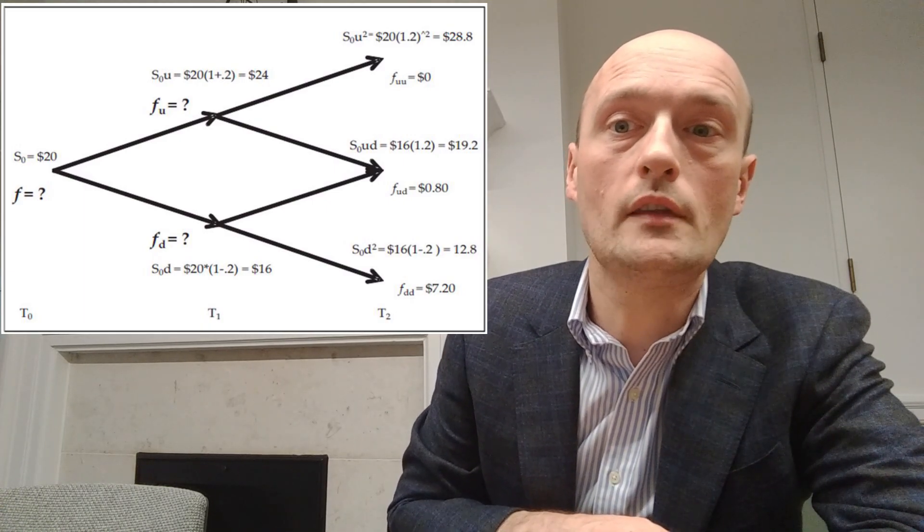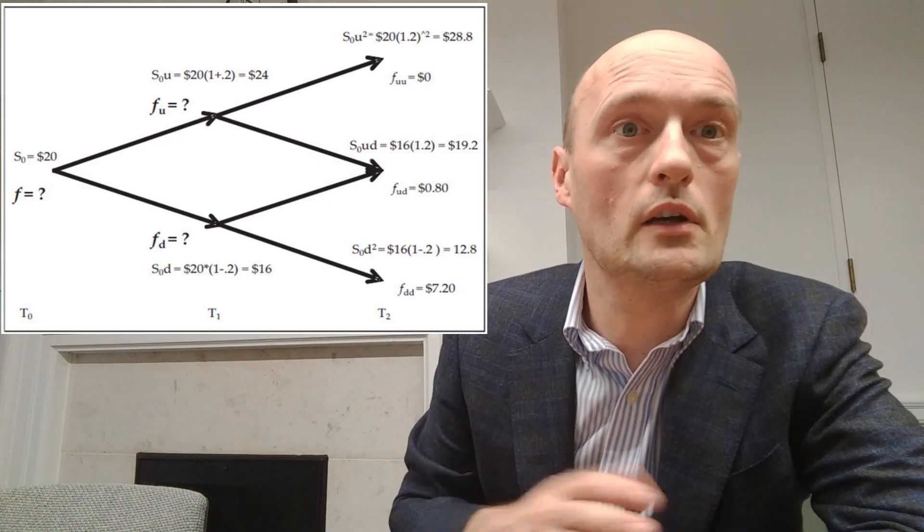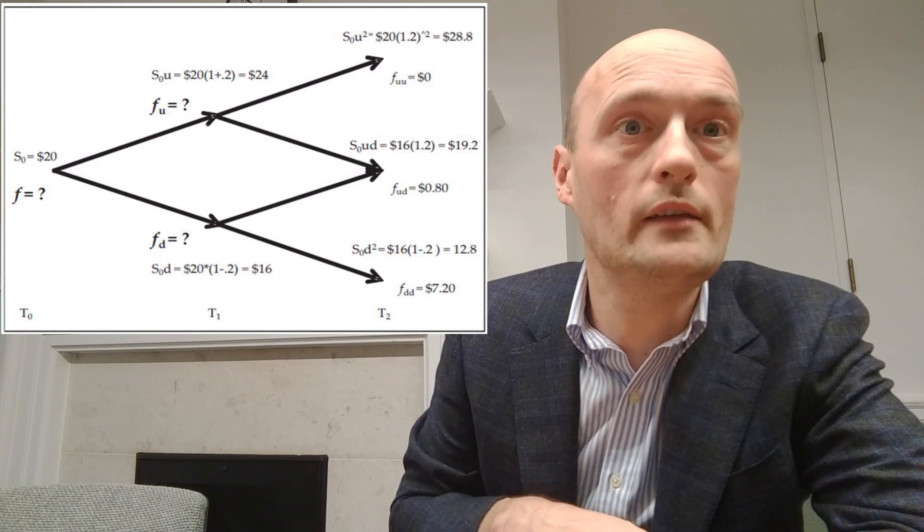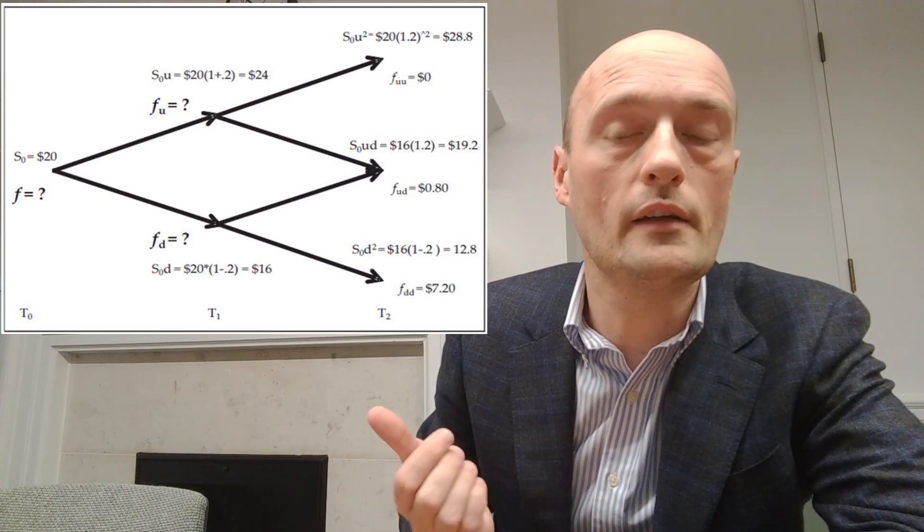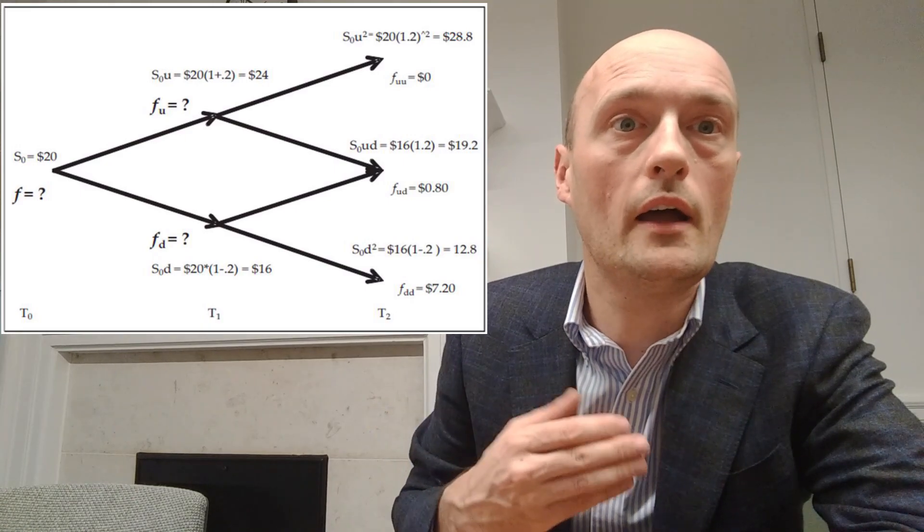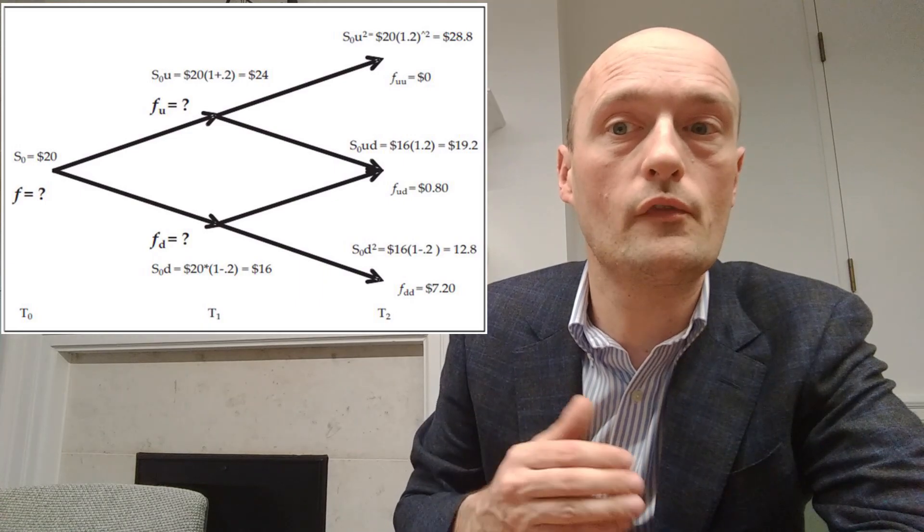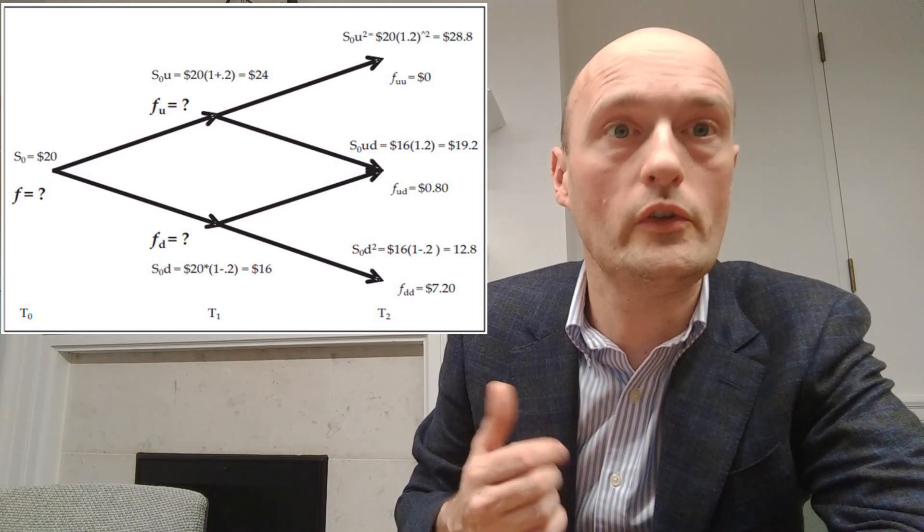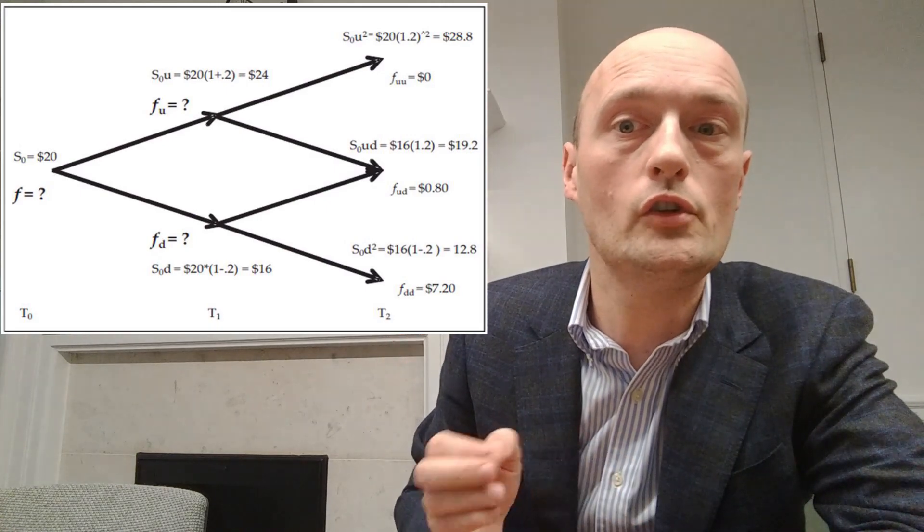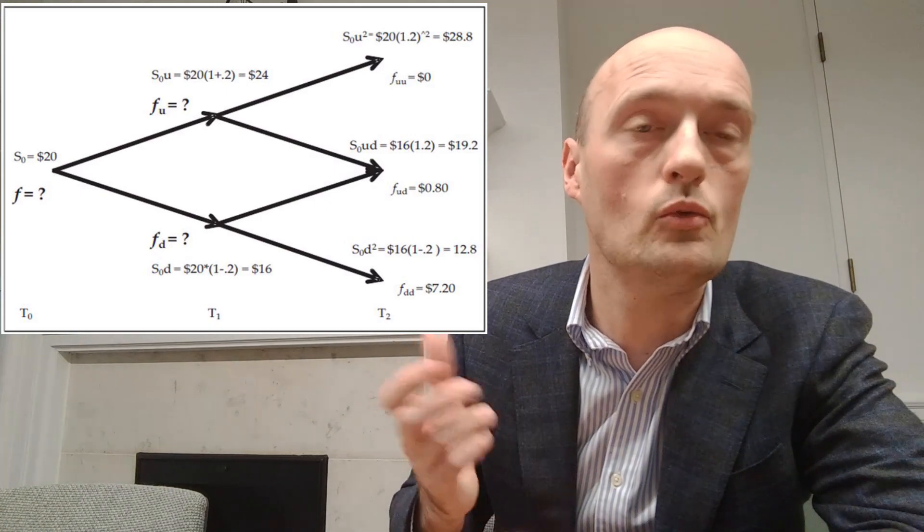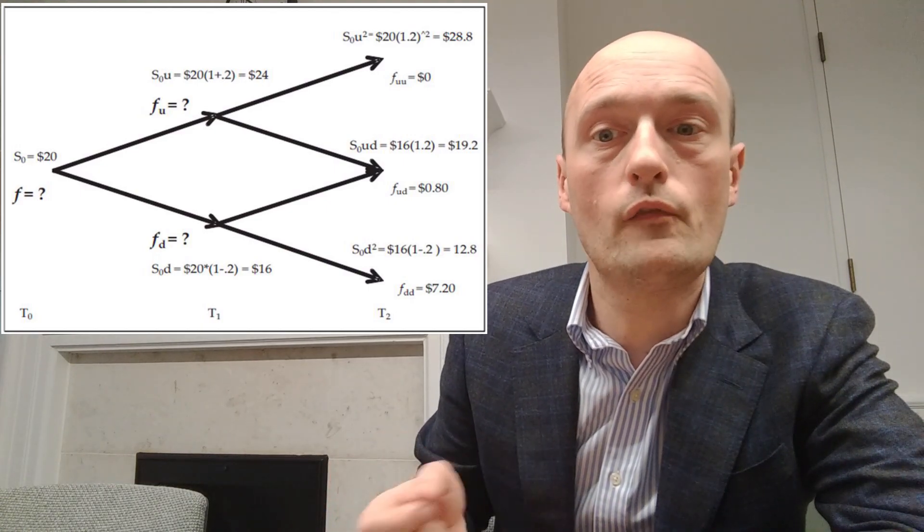Then in the middle scenario the underlying is at 19.2 and you have the right but not the obligation to sell at 20. So obviously you'd happily sell at 20 when the underlying is at 19.2, and the right to sell at 20 would obviously be worth the difference between 20 and 19.2 which is 80 cents. So we write that in. FUD, or you can call that FDU if you want to, is worth 80 cents.